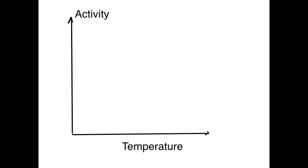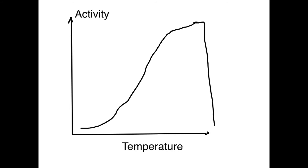Let's have a look at how enzymes behave at different temperatures, taking an enzyme from humans as an example. At low temperature the enzyme doesn't show a lot of activity. Only when the temperature goes up do we reach activity — we reach a peak — and then very quickly the enzyme becomes inactive. At low temperature not a lot is going on; increasing the temperature the activity goes up and up, and then it comes completely down.